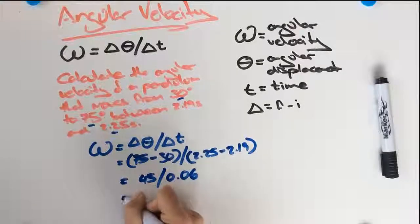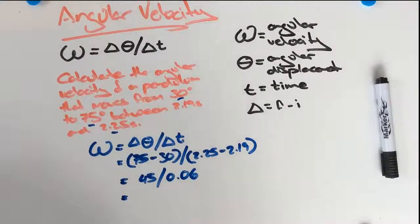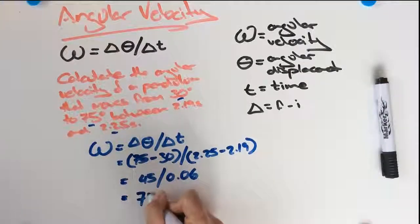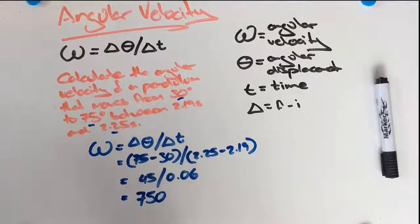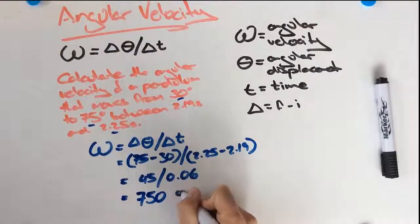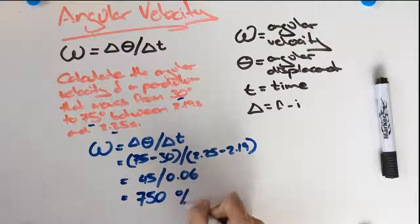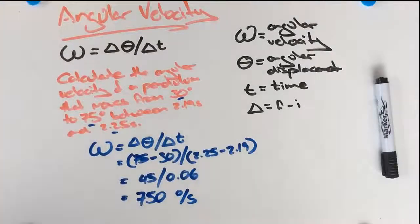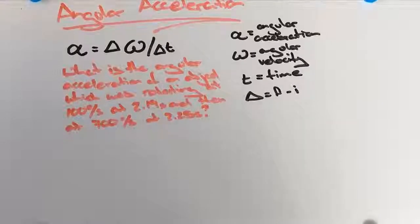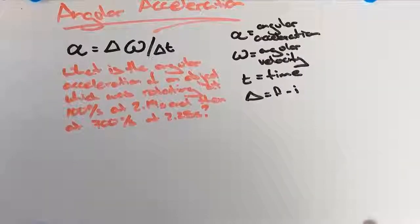And so we are going to get a final angular velocity of 750 degrees per second. So what we are going to look at now is how to work out angular acceleration.